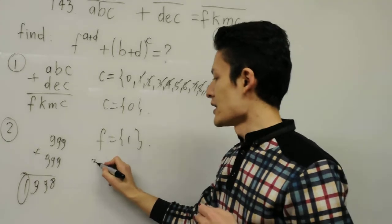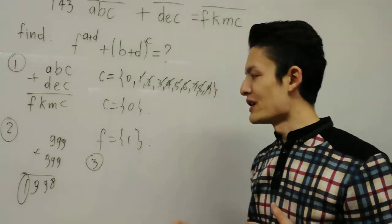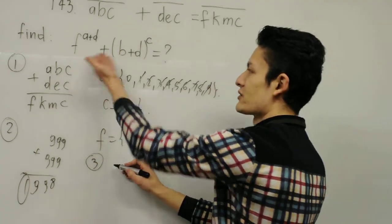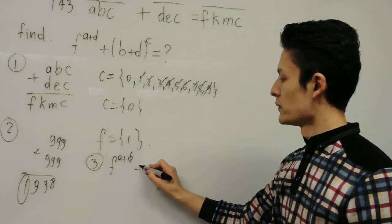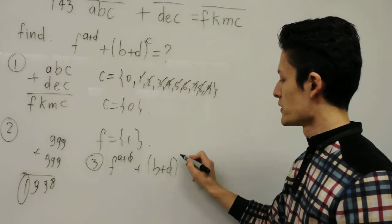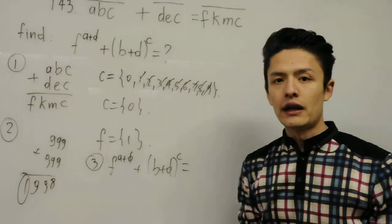And now the last step, the easiest step. Now we know that F is equal to 1. So let's write what we need to find. F to the A plus D plus B plus D to the C.